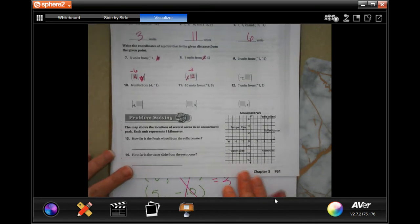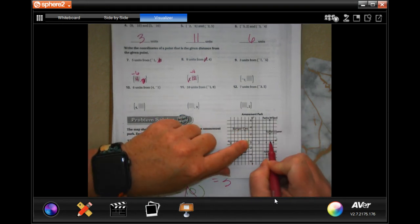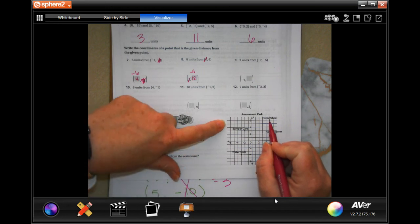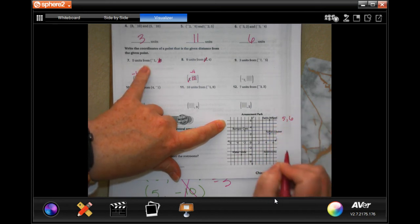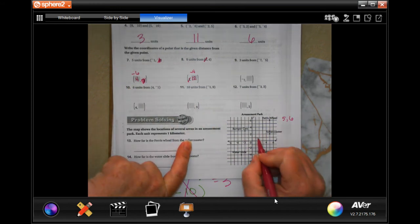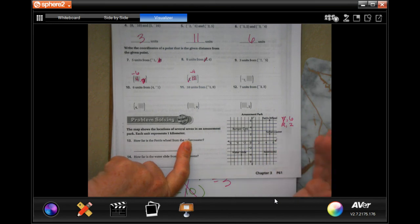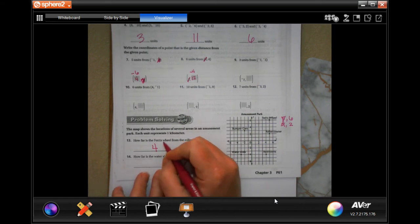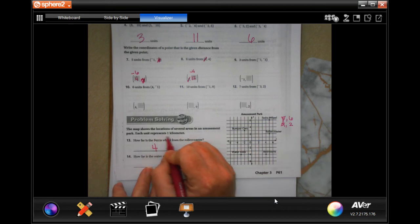We are going to go down to number thirteen and it says how far is the ferris wheel from the roller coaster. So the ferris wheel is on five, let me count, five, six. And the roller coaster is five, two. Those are the same, so six minus two or the difference between them is four. Four kilometers, these are marked in kilometers, each unit represents one kilometer, so four kilometers.